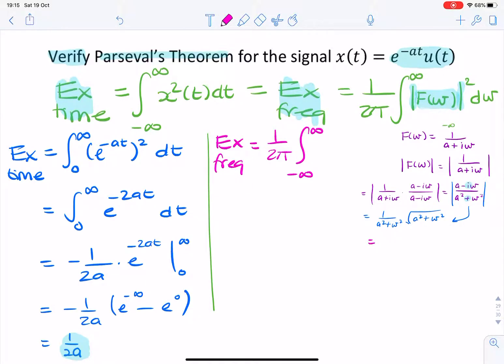So if you simplify that, that actually gives you 1 over square root of a squared plus omega squared.